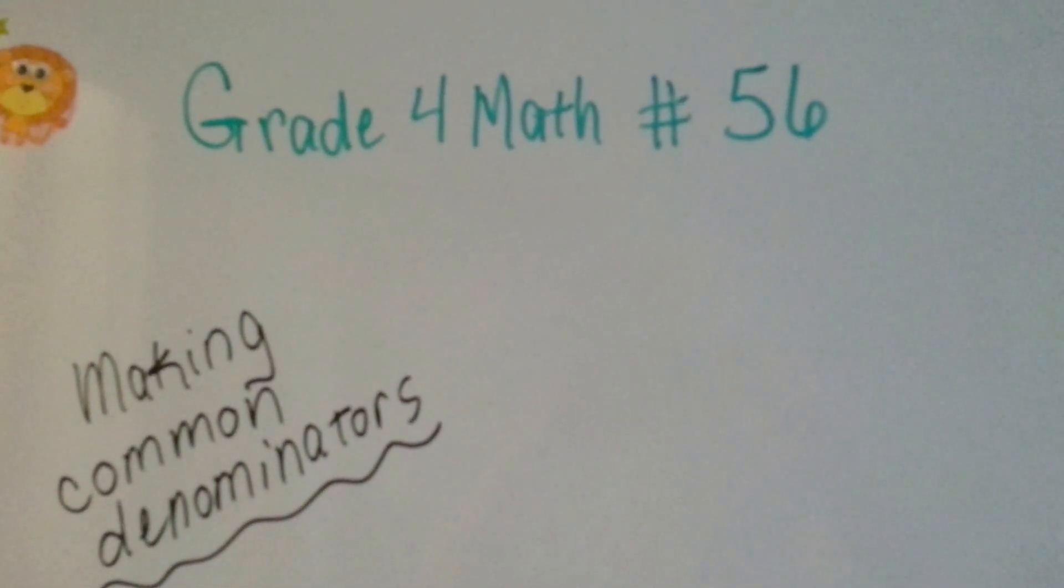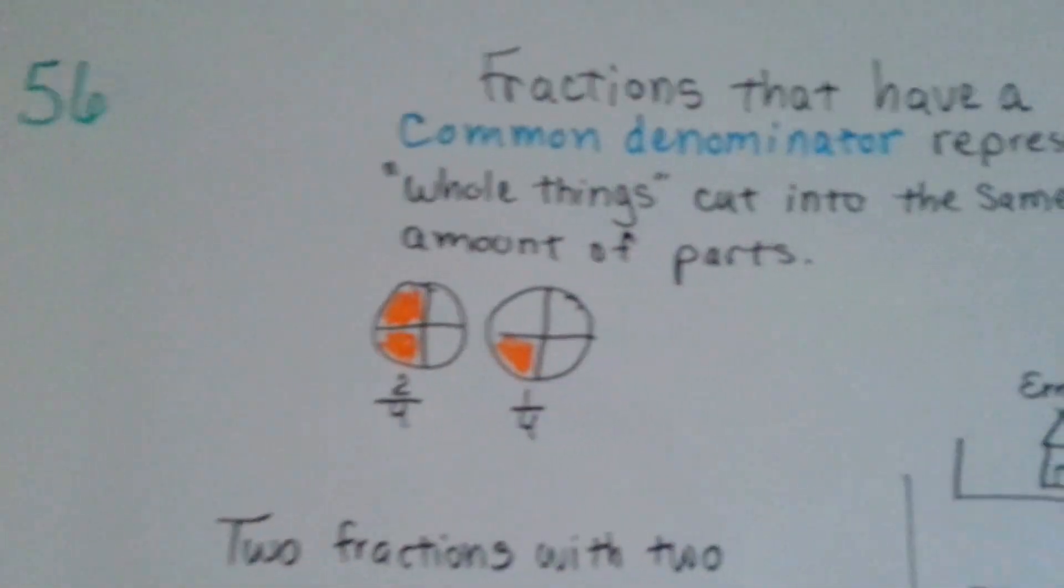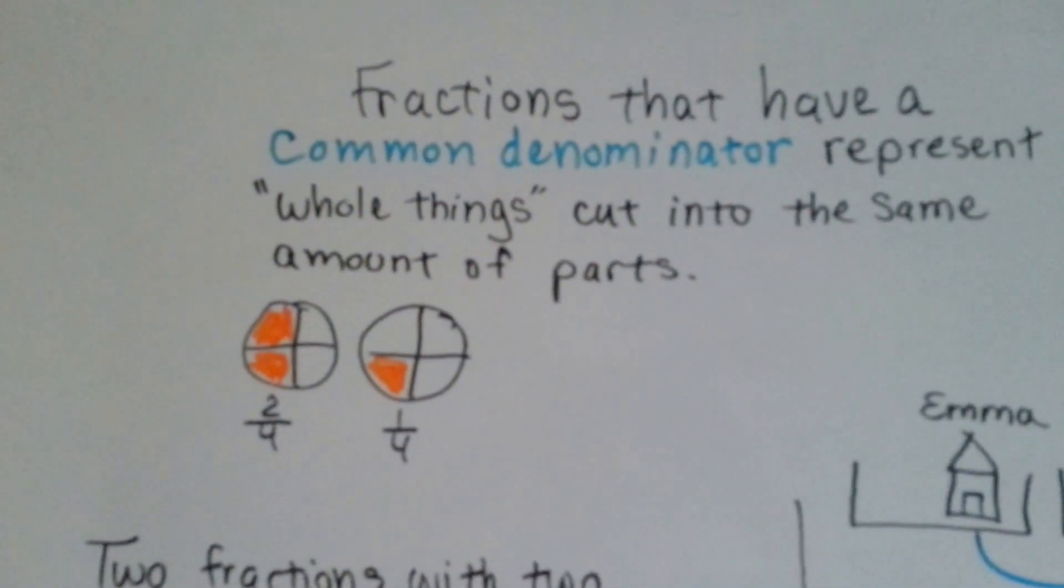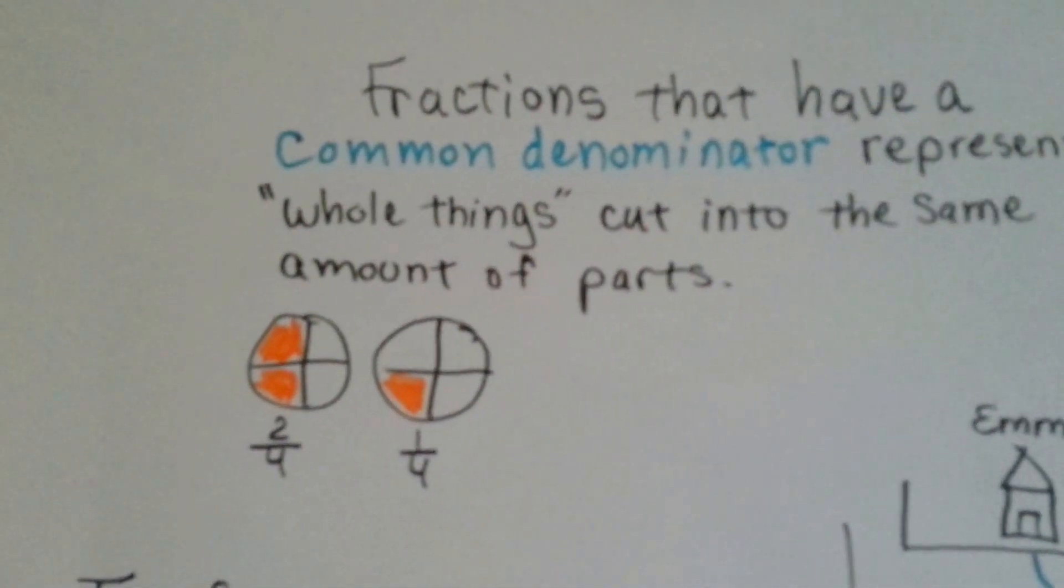Grade 4 math number 56, making common denominators. Fractions that have a common denominator represent whole things cut into the same amount of parts.